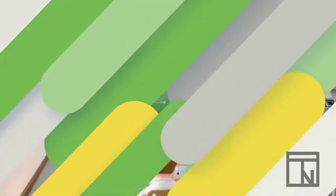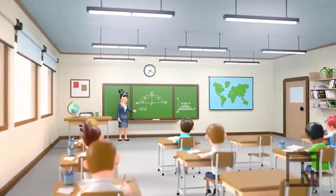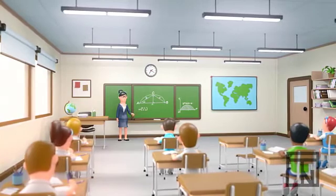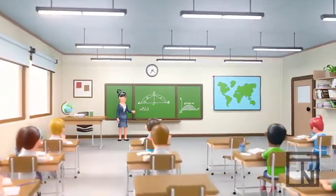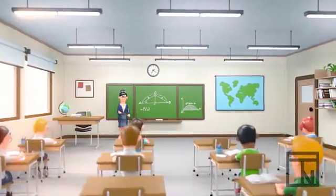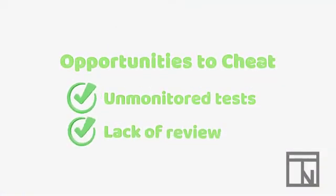The last piece of the fraud triangle is the important one: opportunity. Even if a student has tremendous pressure and they rationalize that cheating is okay, if a teacher doesn't provide them a way to cheat, they can't. Perhaps the teacher had a meeting and left the room while they were taking the test, or maybe the teacher let them take the test from home. Maybe the teacher doesn't look closely at assignments, so students can share assignments easily. Whatever the case, if a teacher provides the opportunity, it is easier for the student to commit fraud.